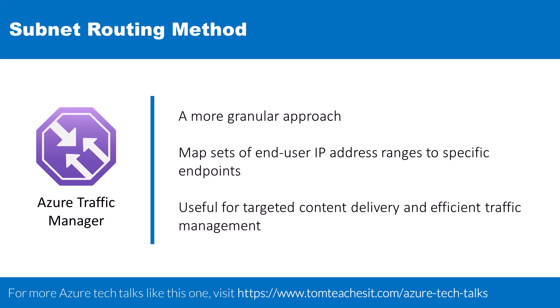And then lastly, we have the subnet routing method. This method offers a more granular approach — it involves mapping sets of end-user IP ranges to specific endpoints. When a request is received, the endpoint that corresponds to the source IP address range of the request is returned. This method is particularly useful for targeted content delivery and efficient traffic management.